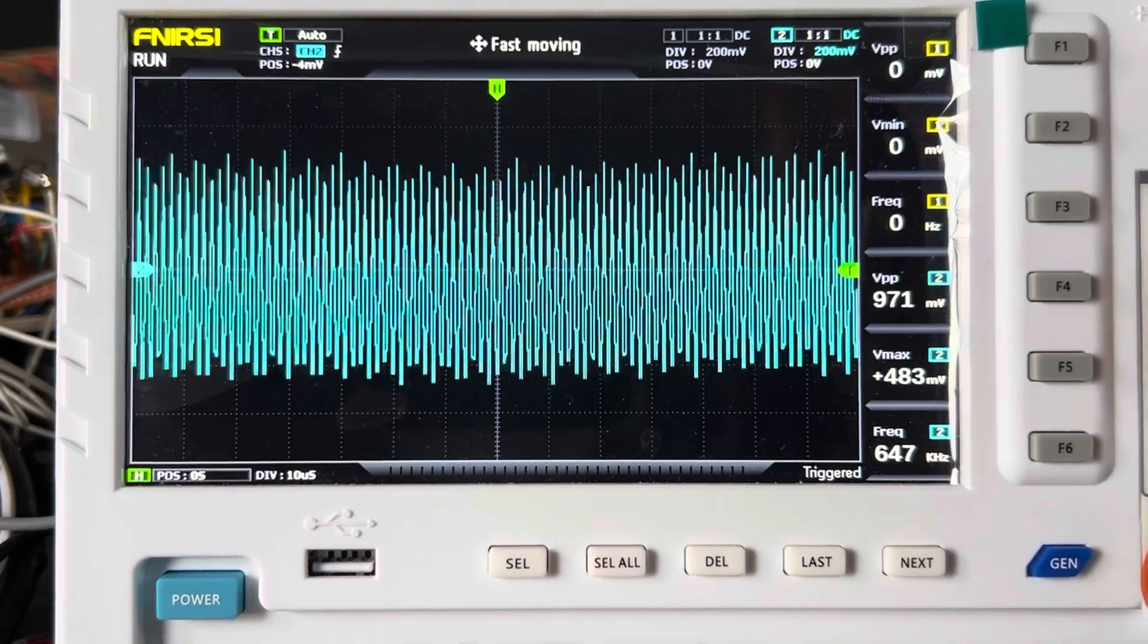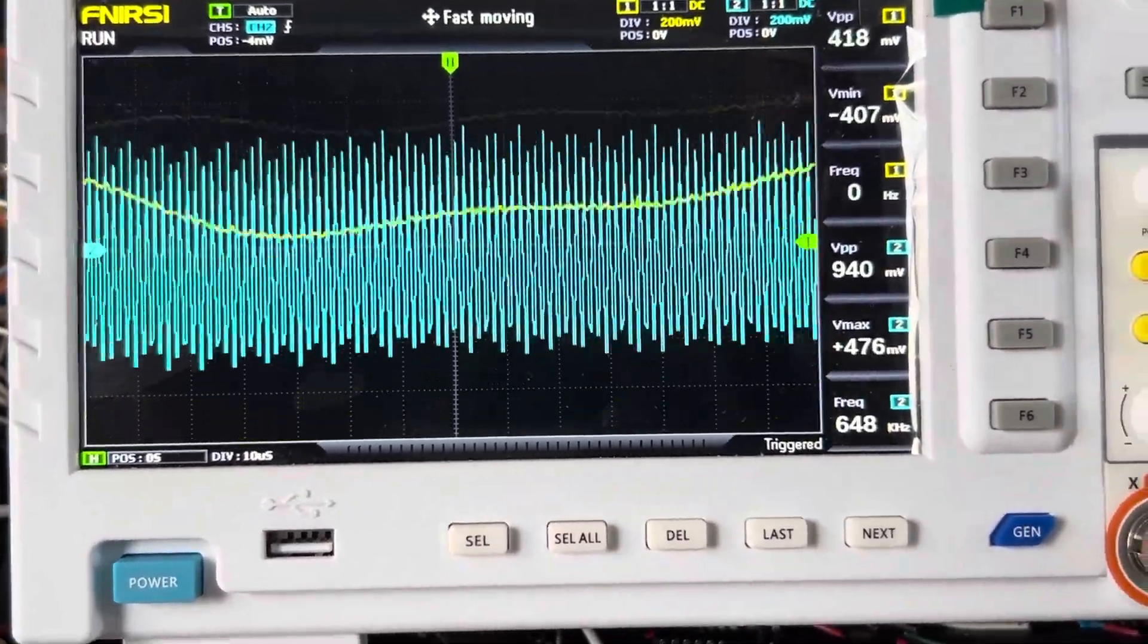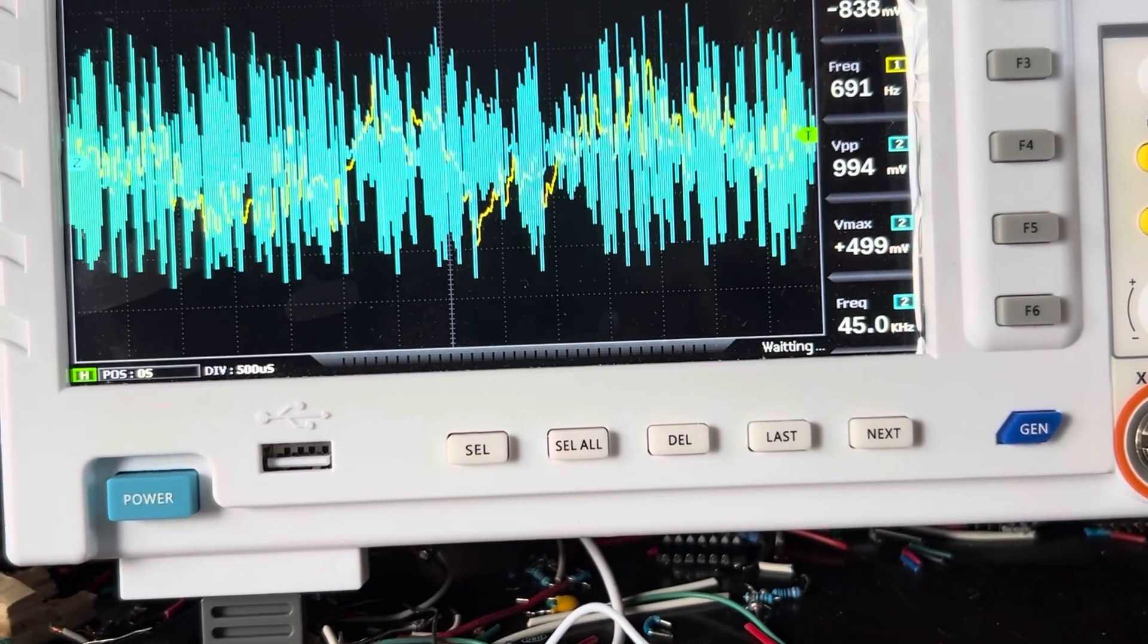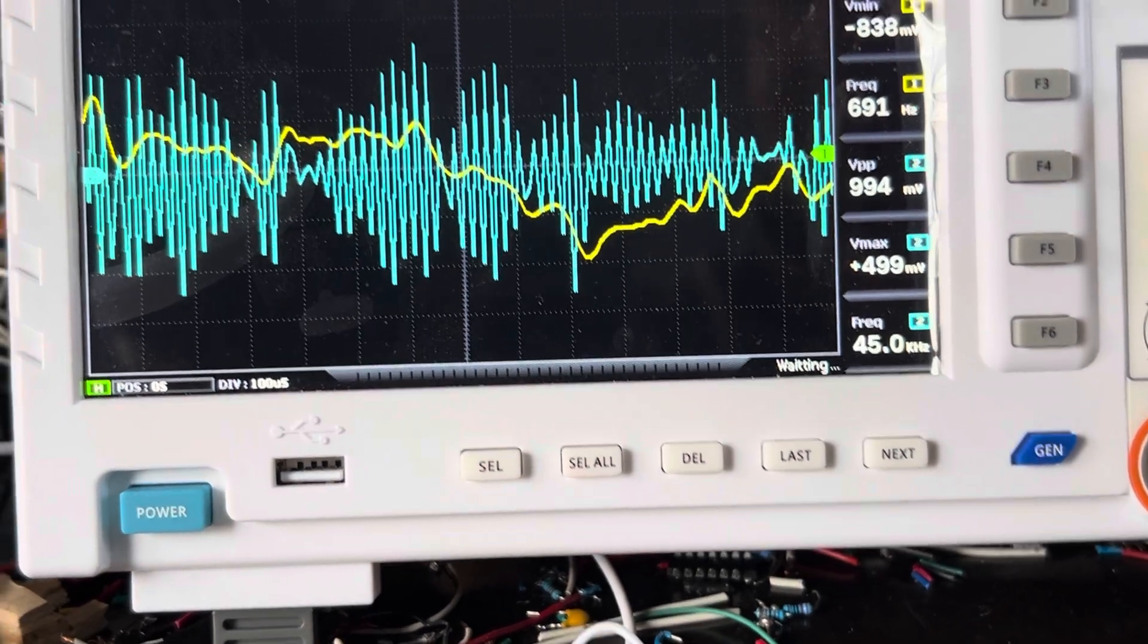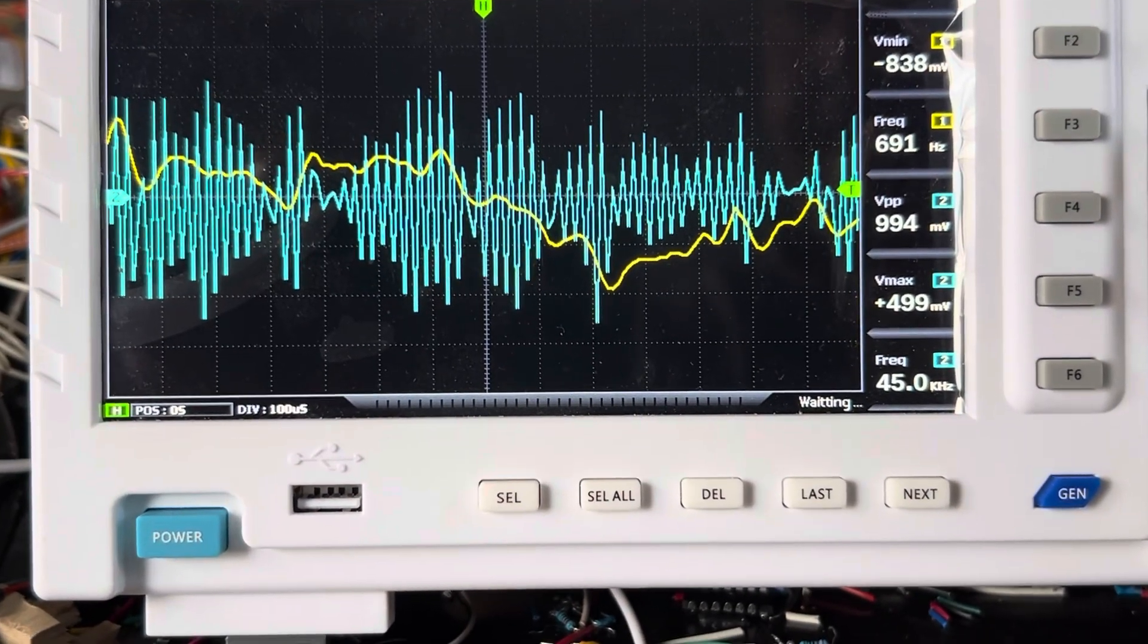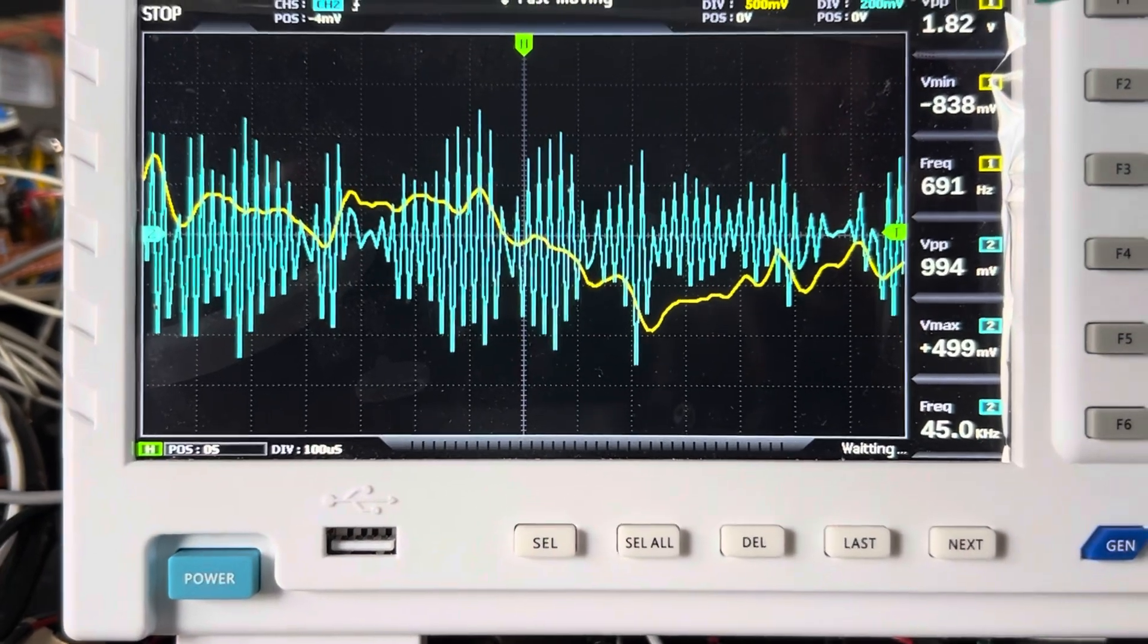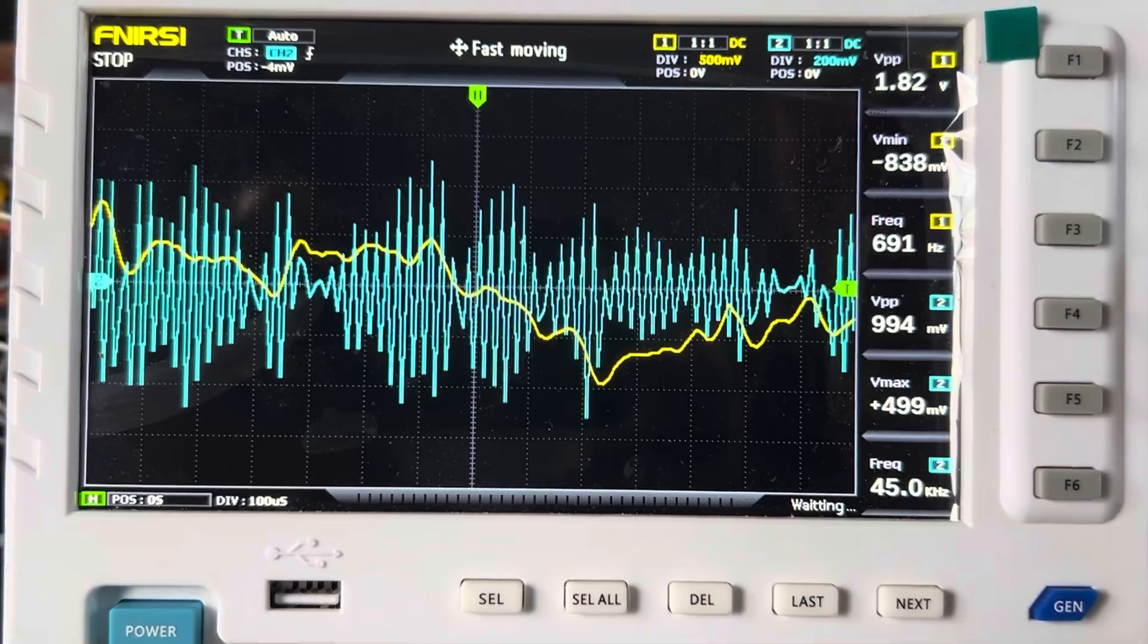And if I put the actual signal superimposed on it, you can stop it here, and you can see the amplitude of the carrier wave modulating with the input signal. The carrier wave is in blue, and the yellow tracing is the actual input signal.